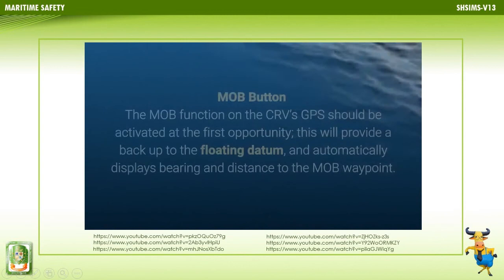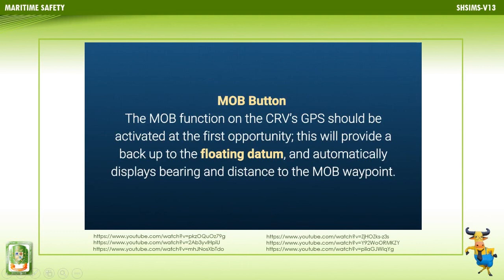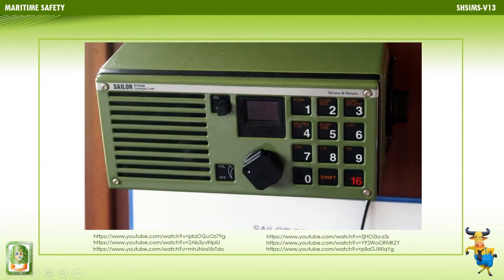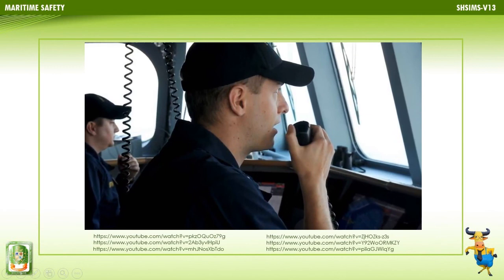The MOB function on the CRV's GPS should be activated at the first opportunity. This provides a backup to the floating datum and automatically displays bearing and distance to the man overboard waypoint. Sending out a distress call will ensure that assistance is available if necessary; it can always be cancelled if the situation is resolved. Whether to send immediately or later is at the skipper's discretion.